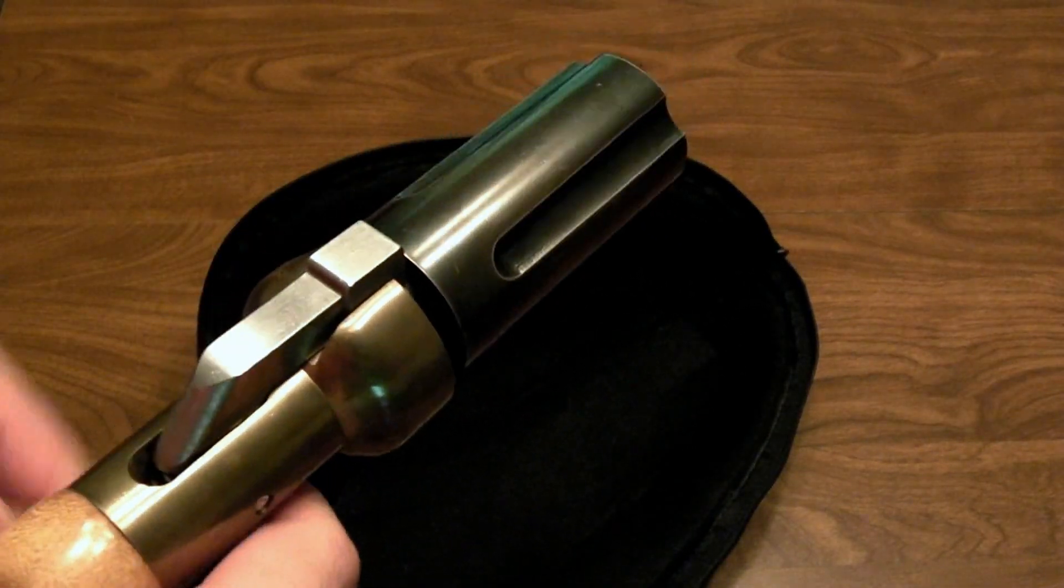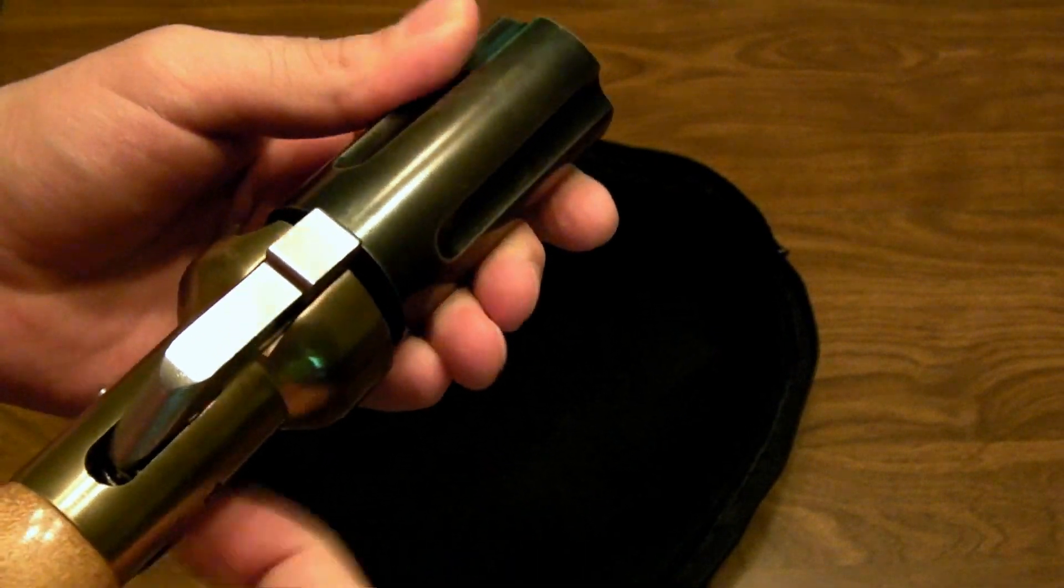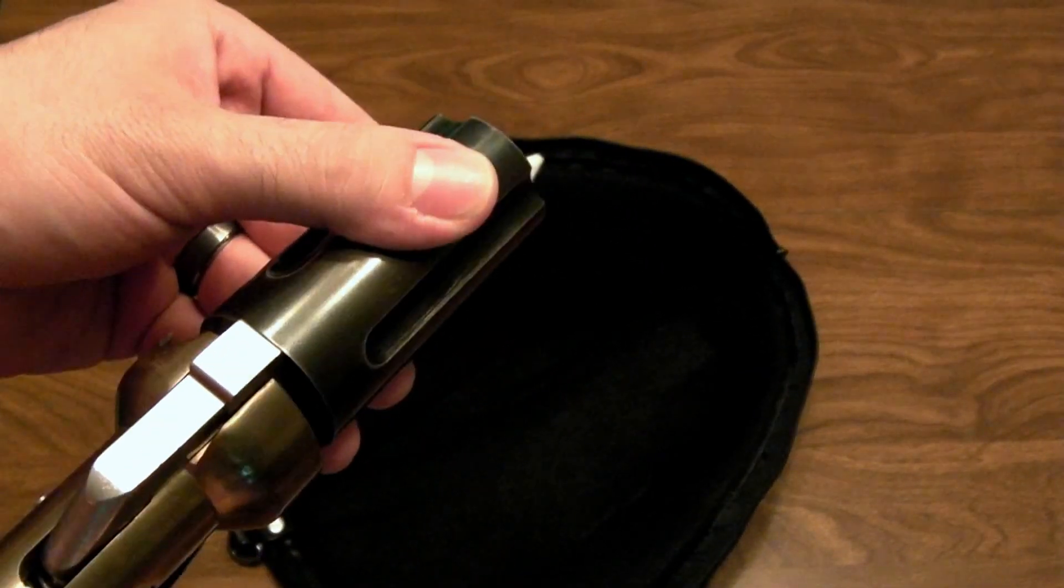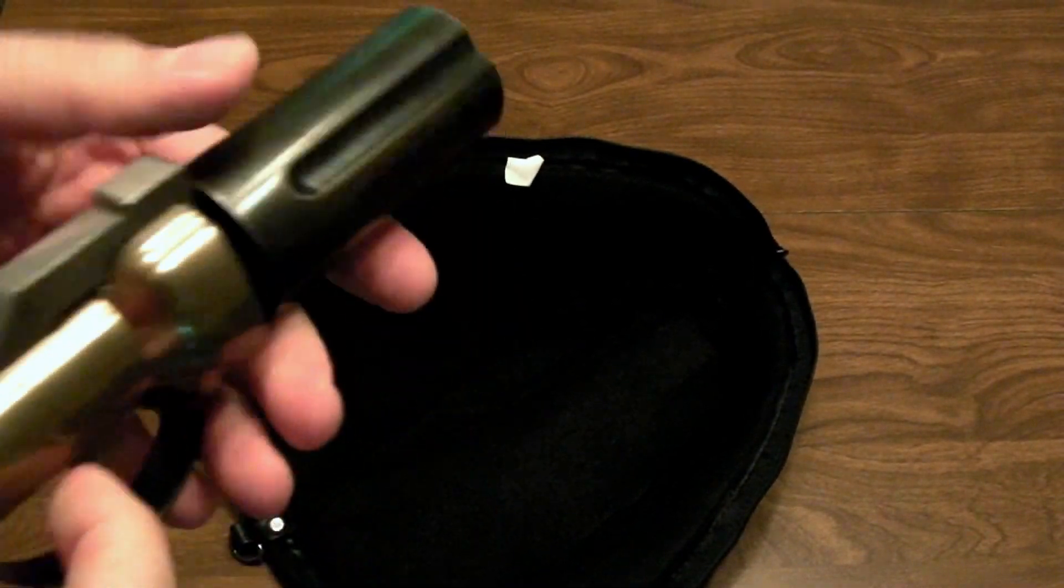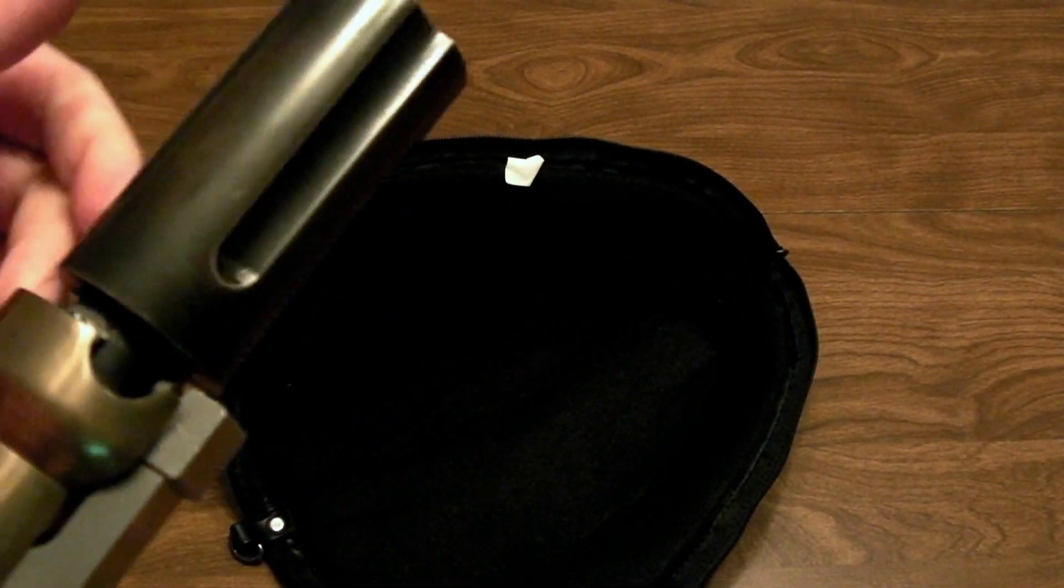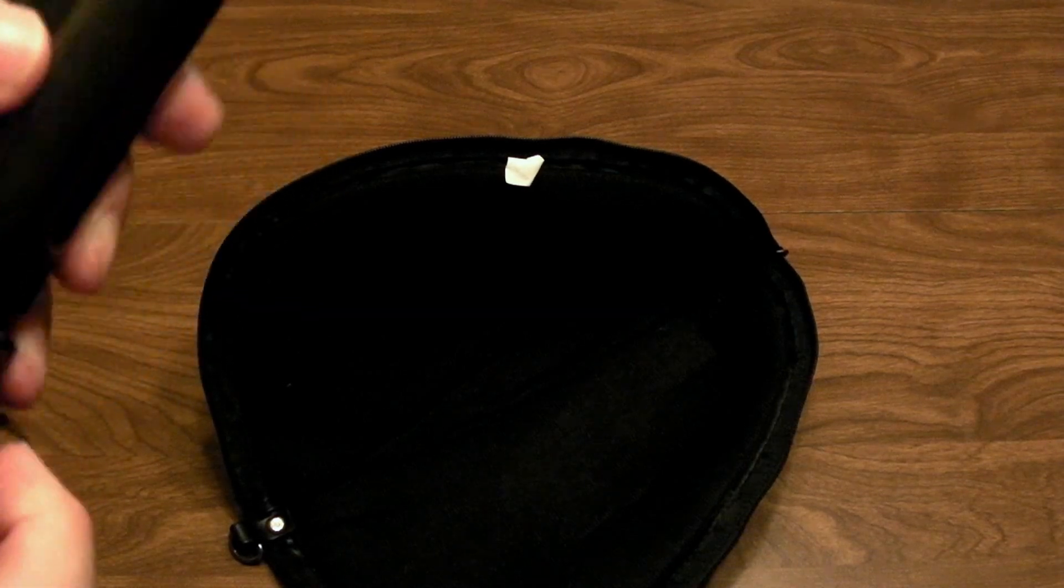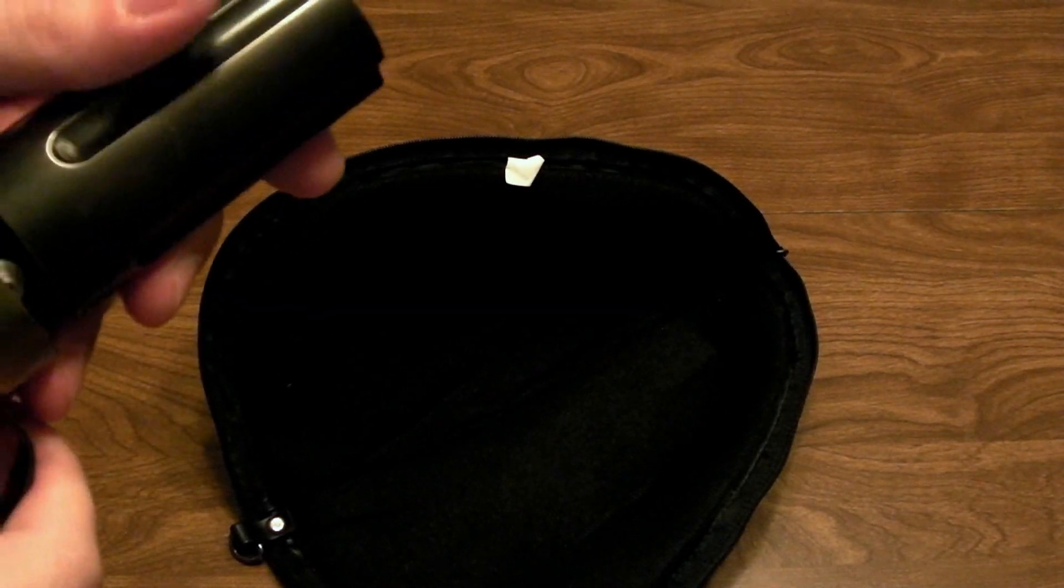You just pull the trigger and then rotate the barrel. Pull the trigger again, rotate the barrel. You can see there's no sights on it. It's not very accurate. It was really just designed to be sort of a belly gun, just kind of quick shot, self-defense.